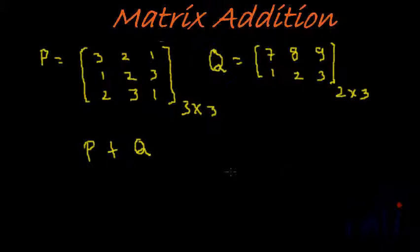Now look at these two matrices P and Q. Is it possible to add P and Q? What will be P plus Q? Remember the first rule of addition says the order of the matrices that need to be added has to be the same.